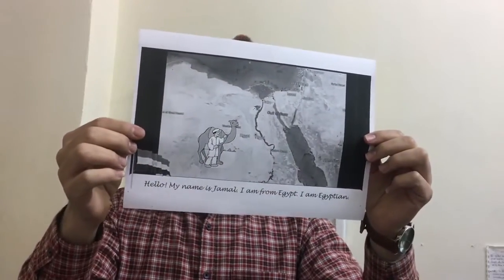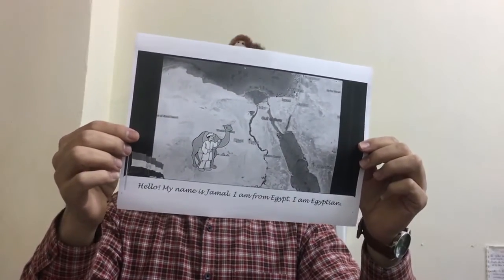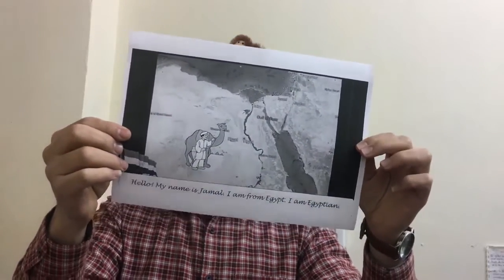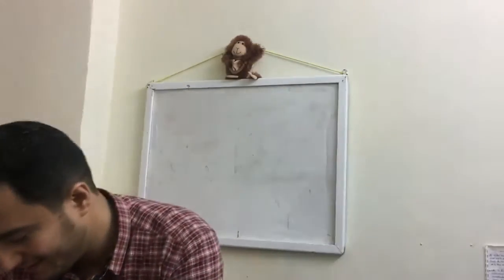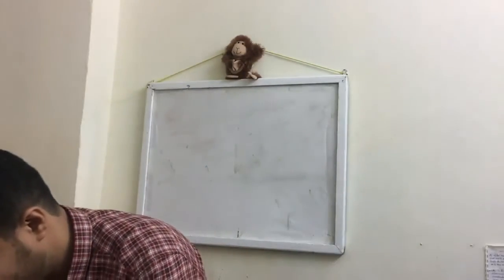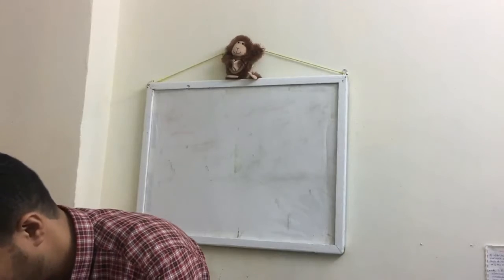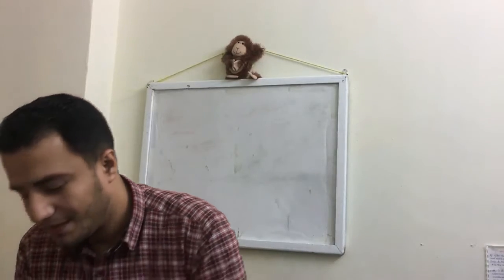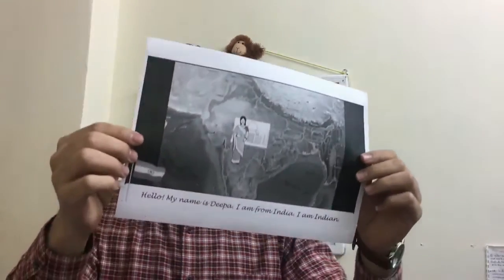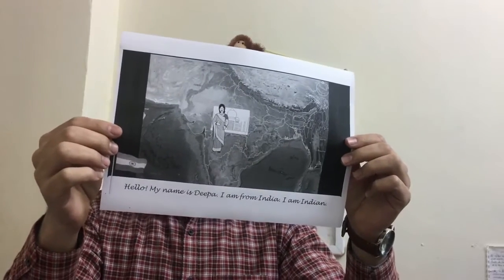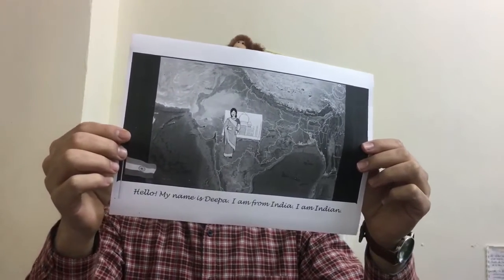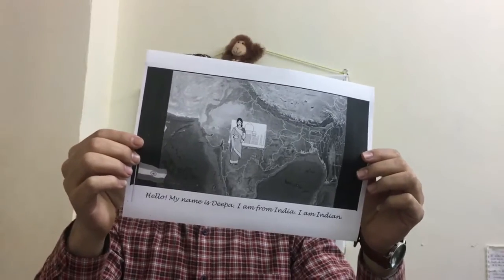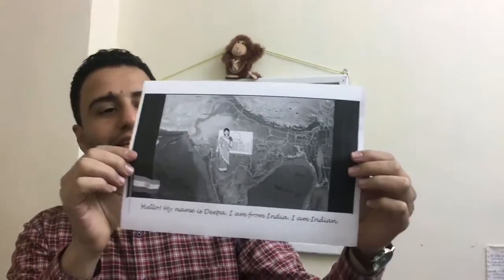The third one is our beautiful country — hello, my name is Emel, I'm from Egypt, I'm Egyptian. And then: hello, my name is Deepa, I'm from India, I am Indian. Thank you Deepa.